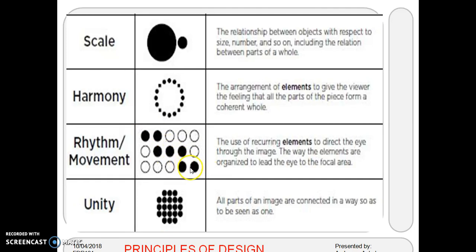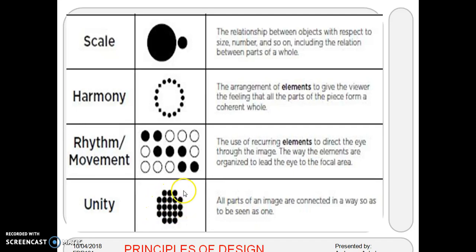The way the elements are organized leads the eye to the focal area — that is the focal area in this composition. Unity: all the parts of an image are connected in a way so as to be seen as one. Different parts are arranged together to form one object.